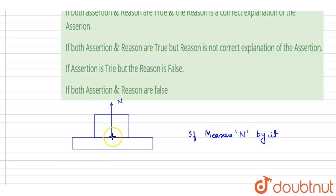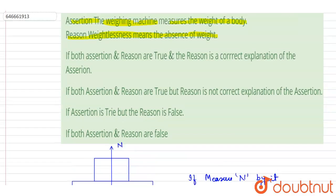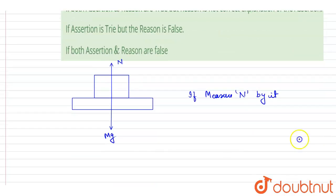it will be equal to mg. So if you see here, in the question it is said that weighing machine measures the weight of the body. It will measure mg if it is kept on a horizontal floor and no motion is there. But it is not compulsory. If you make it move, for example, if you make it move in upward